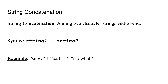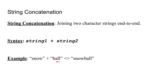String concatenation has syntax that looks just like this. You're going to have one string and another string, and you are going to add them together. It looks like you're adding them together, but it's not a math add — it is you are adding this string onto the end of this string. So in the case of this example, we have 'snow' and 'ball', which are two character strings, and when you concatenate them together end-to-end, you get 'snowball'.